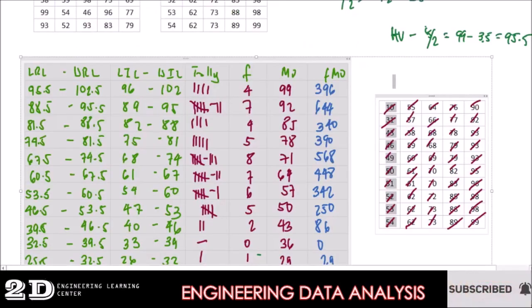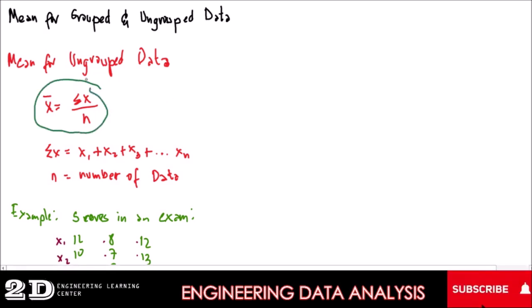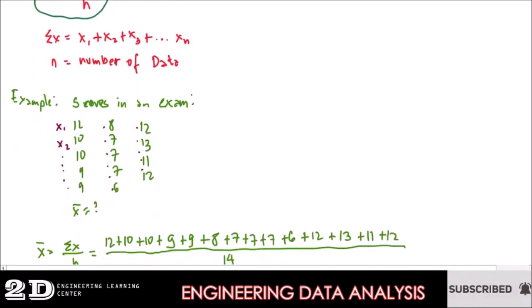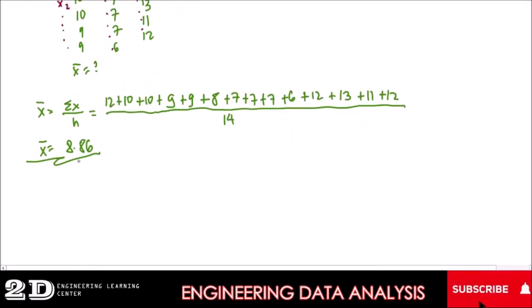When considering the mean, there are two types of data: grouped and ungrouped. For ungrouped data, the formula is simply the definition of mean itself — we get the sum of all the data and divide by the number of data. For example, we get the sum and divide it by 14 because there are 14 data given, and our mean is equal to 18.86.